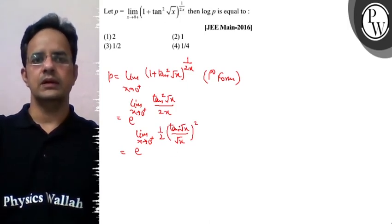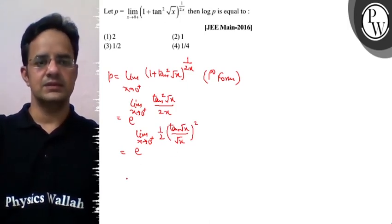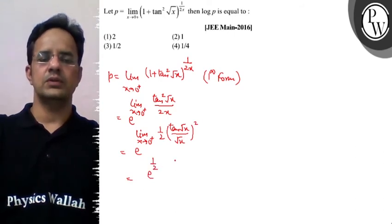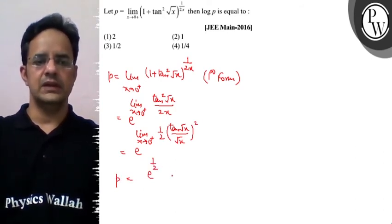Aur ye limit 1 ho ga agar x tending to 0 hai to so what we get is e raised to power 1 upon 2 yani ye aapko p ka value mila